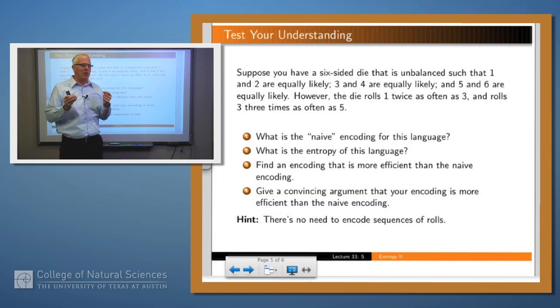Let's see if you understood what we did here. I'll give you a homework exercise. Suppose you have a six-sided die numbered from one to six on the sides. One and two are equally likely, two and three are equally likely, four and five are equally likely. But one is twice as often as three, and three is three times as often as five. You could build a chart with the probabilities of all these things, make sure they add up to one for the six symbols in our language. What's the naive encoding for that language? We've got six possibilities, so we're going to have to use three bits for the naive encoding.